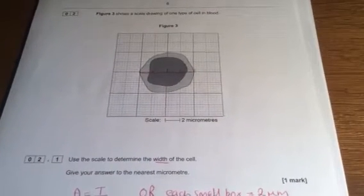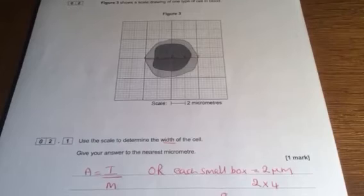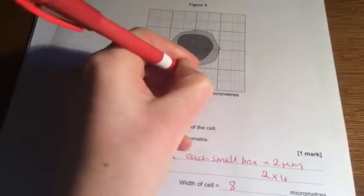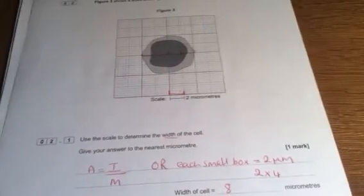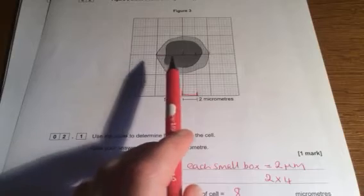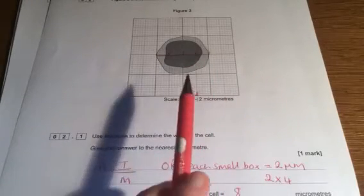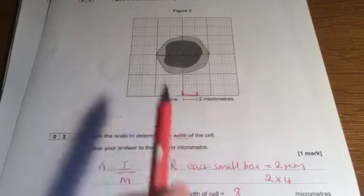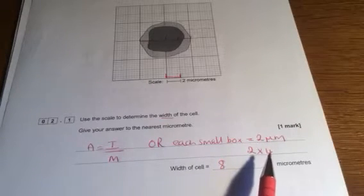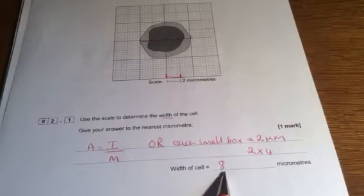So here you've got a scale drawing of one type of cell in the blood, and it says use the scale to determine the width of the cell. So our scale is each block that's this size, that's what that bar means, is the same as two micrometers. All you have to do is work out how many blocks that size fit into the width of the cell. You can see with my pen again I've gone one, two, three, four. There are four of these bars across the width of the cell. So each small box equals two micrometers. There are four of them, so each one equals two, so that's four times two or two times four, and that gives you a width of eight micrometers.